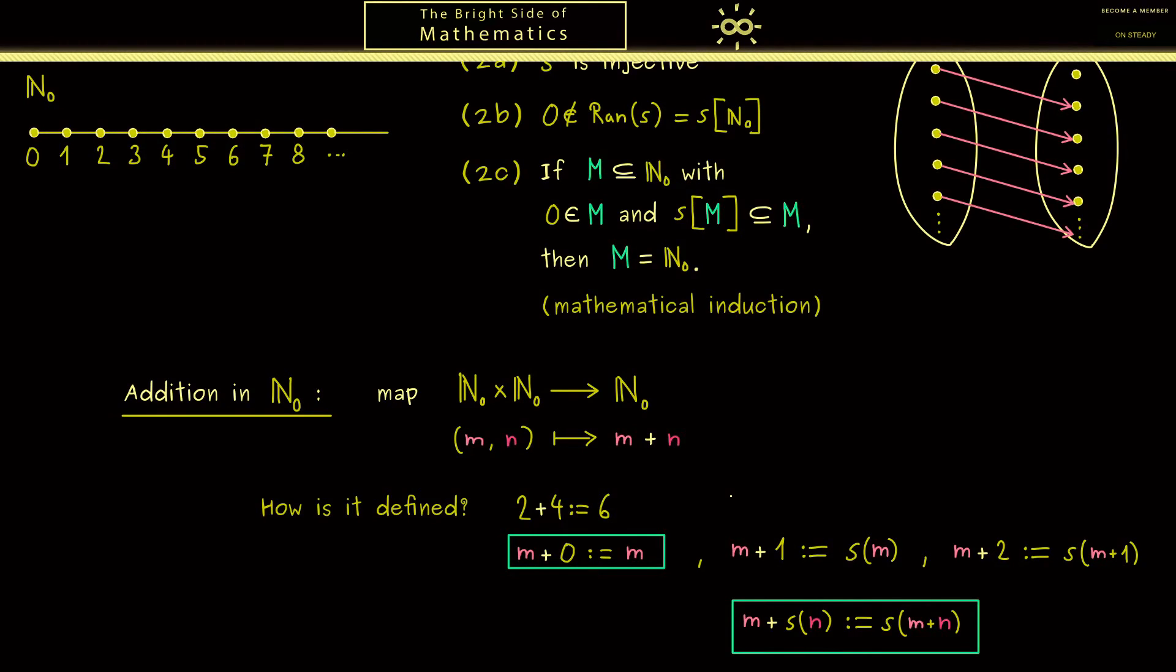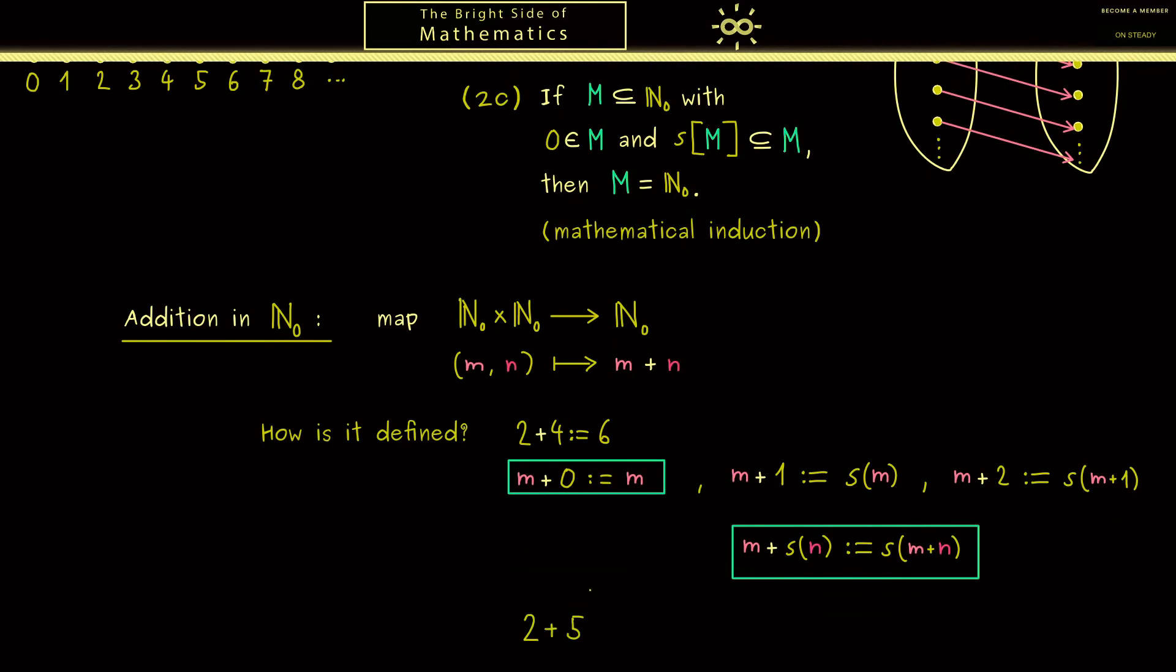For example, let's calculate 2 plus 5. Now we know we can write this as 2 plus the successor of 4, and by our general definition this would be the successor of 2 plus 4. Now we can use that we already know that 2 plus 4 is 6, so we have the successor of 6, which is just 7. This means for getting a new result, we have to go backwards until we reach a step where we already know the result.